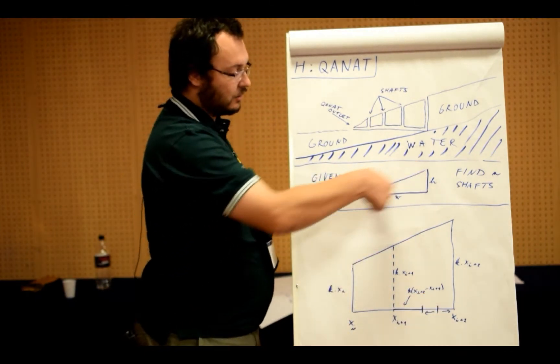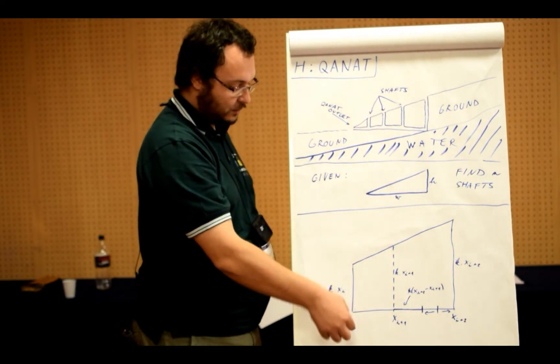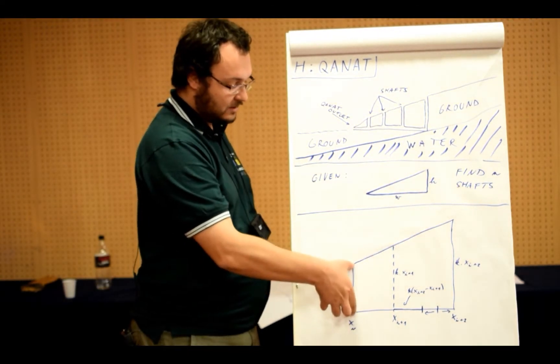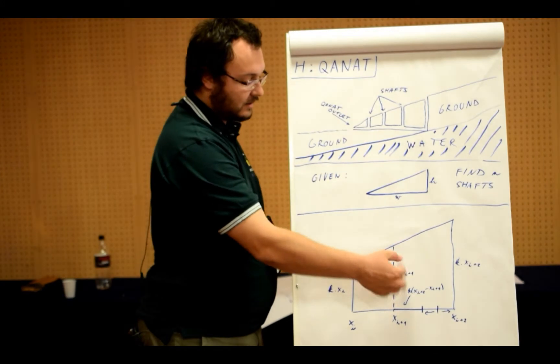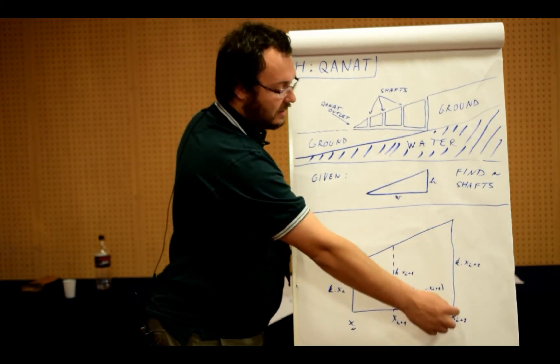So what is going on here? As this is a triangle, everything is similar to itself. So there is a constant k such that this is k times Xi, this is k times Xi plus 1, this is k times Xi plus 2.